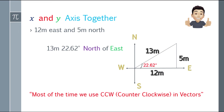So the final answer will be 13 meters, 22.62 degrees north of east. How do we know if it's north of east or east of north? You notice the angle points toward north — that's what you put first. It's going to the north and coming from the east, so that will be north of east. Most of the time we use CCW or counterclockwise for vectors.